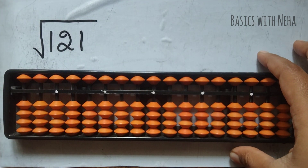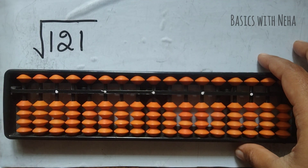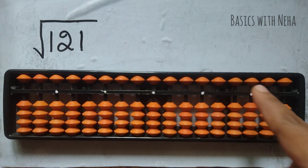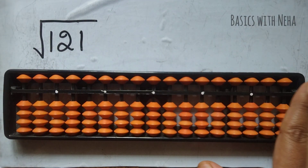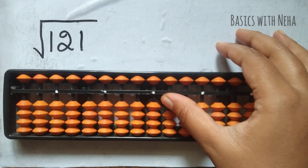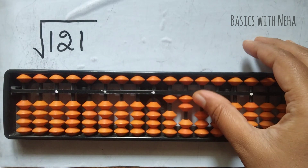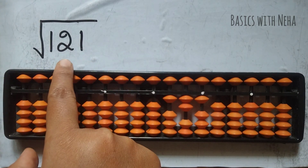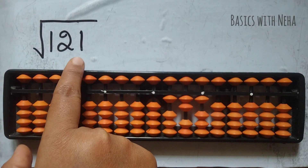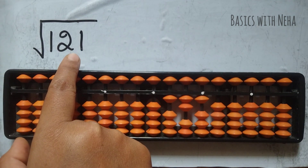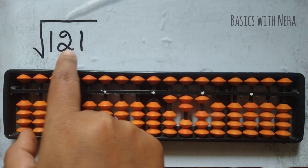First, we need to place the number 121 on the right part of our tool. I'm going to place it from here — one, two, one — considering this to be the ones place. Now I have to group this number into two digits from the right side, so 21 is one group.